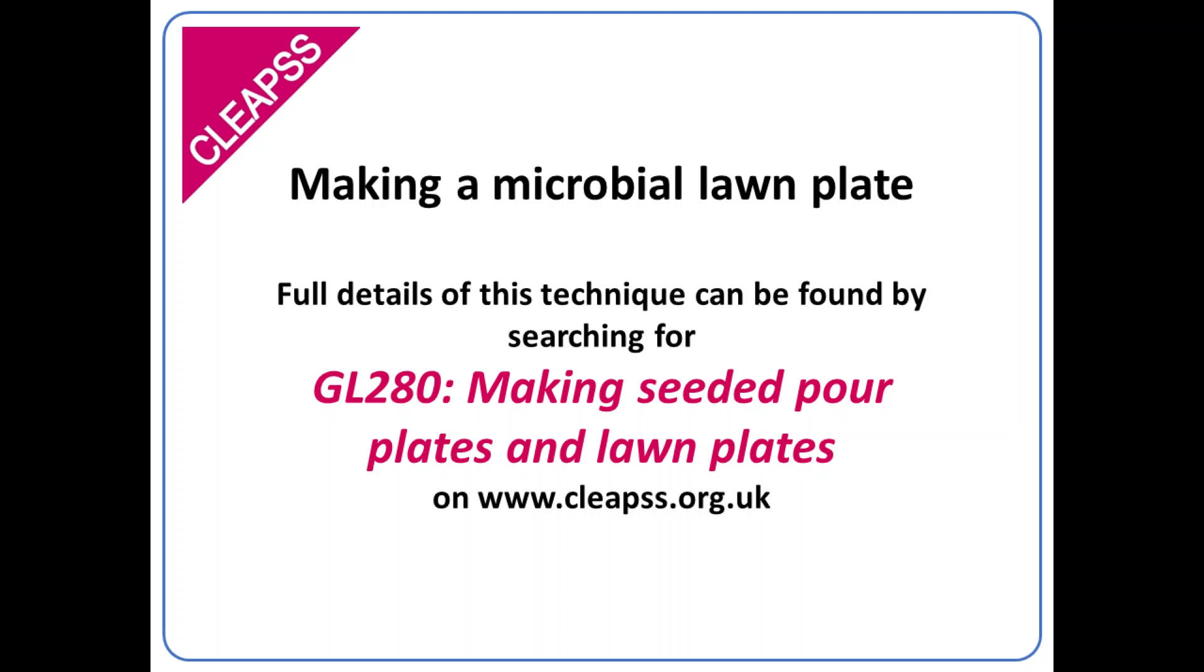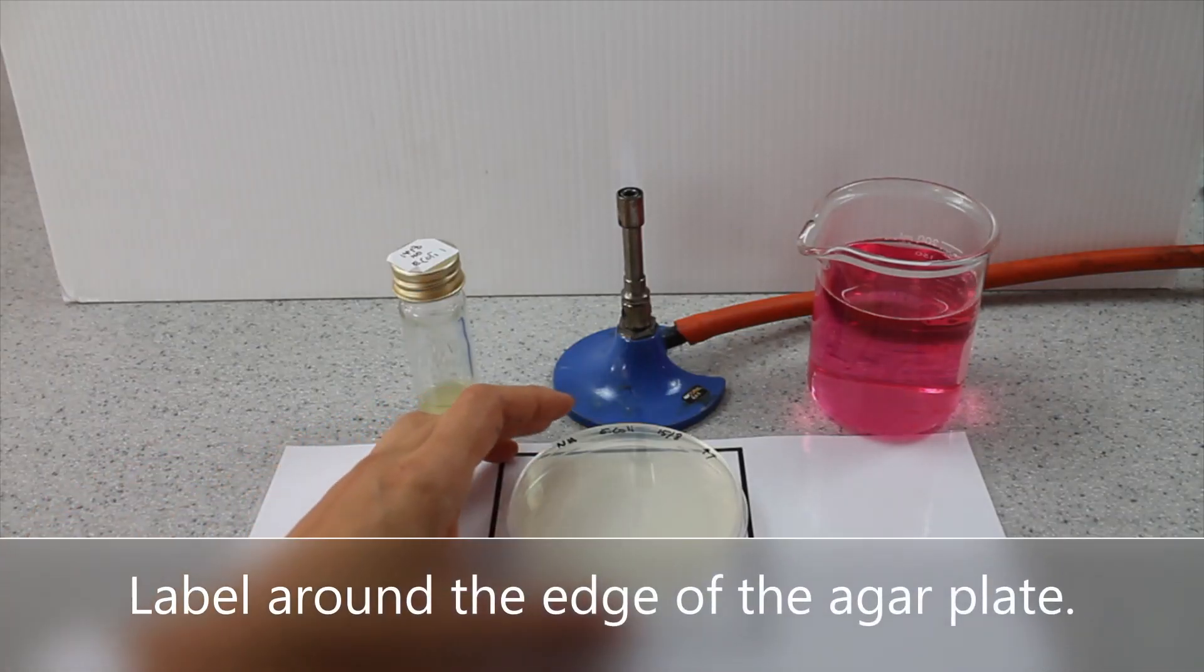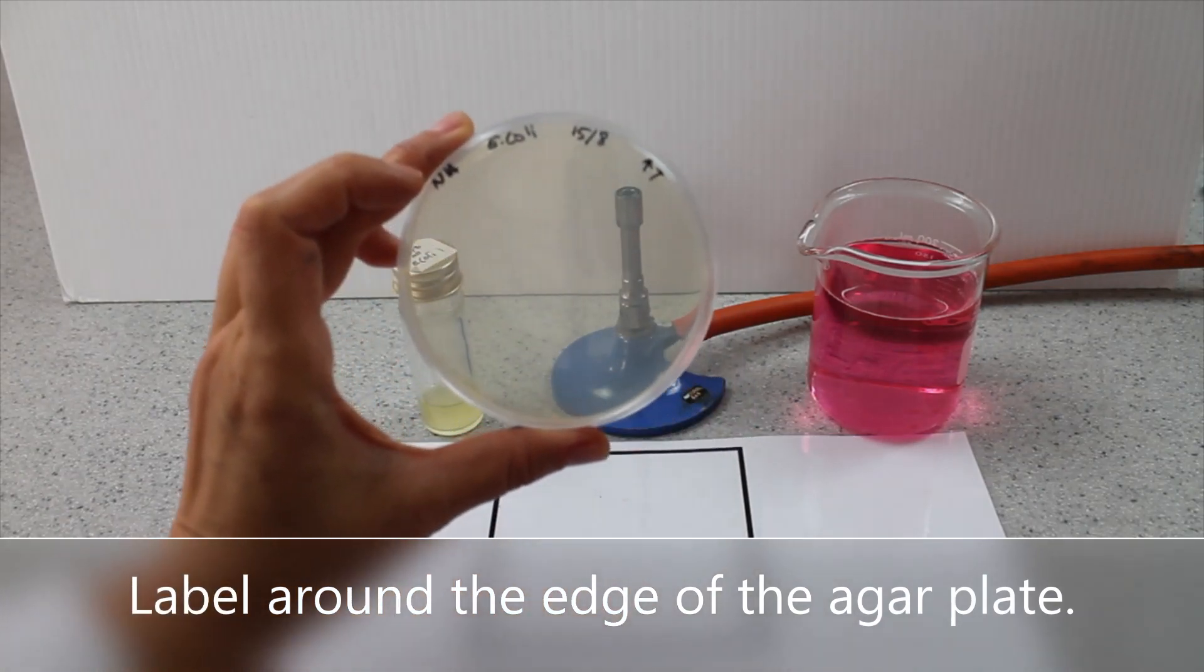Making a microbial lawn plate. Label around the edge of the agar plate.